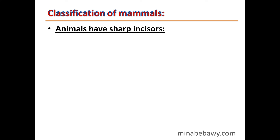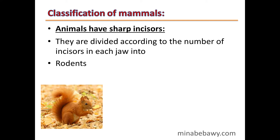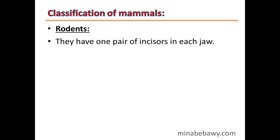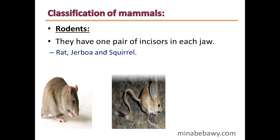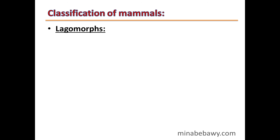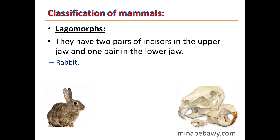The final category of toothed mammals is animals with sharp incisors, divided according to the number of incisors in each jaw into rodents and lagomorphs. Rodents have one pair of incisors in each jaw, such as rat, jerboa and squirrel. Lagomorphs have two pairs of incisors in the upper jaw and one pair in the lower jaw, such as rabbit.